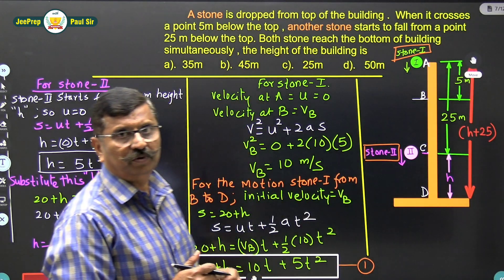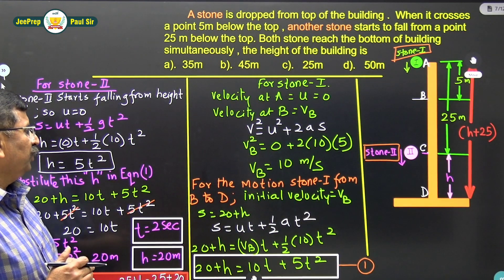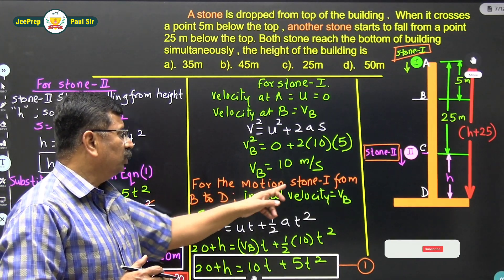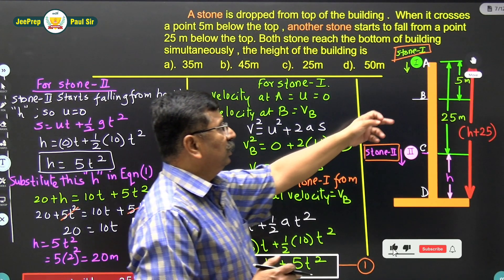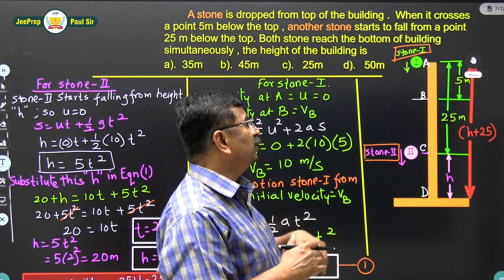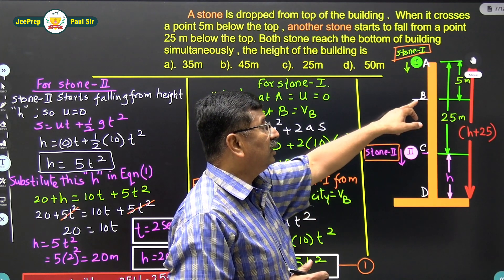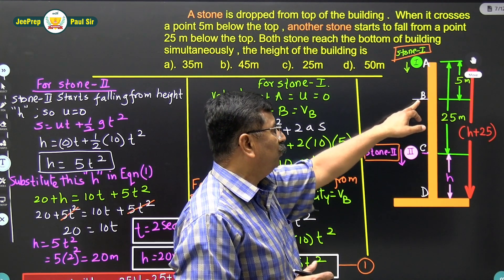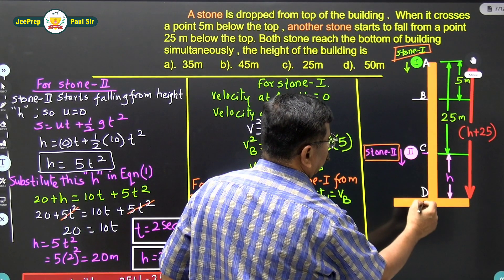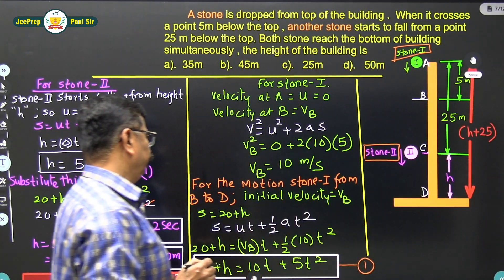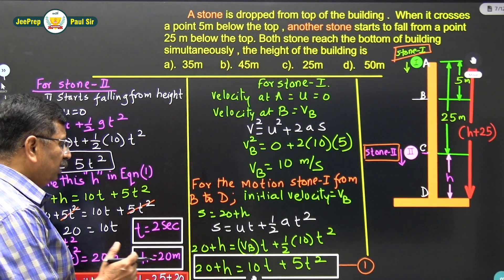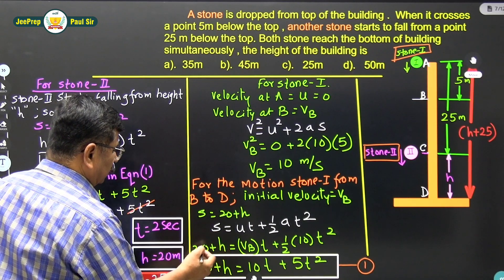At that same moment, stone 2 starts falling from point C, which is 25 meters below the top of the building. Now for the motion of stone 1 from B to D, the velocity at B — which is 10 m/s — becomes the initial velocity. The distance from B to D is 20 plus h. We apply s = ut + ½at².